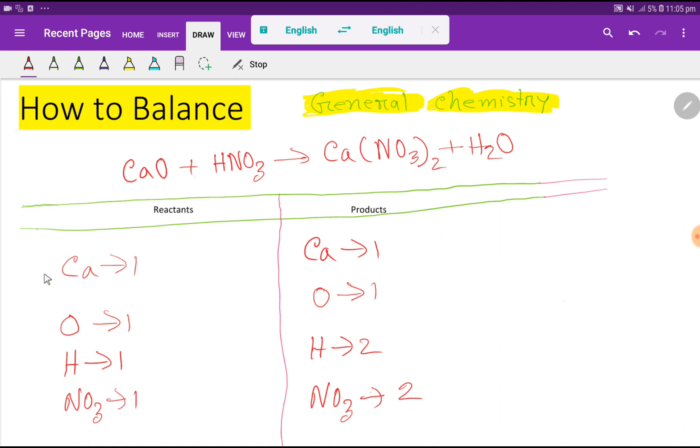So to balance this equation means we have to balance the number of calcium, oxygen, hydrogen, and NO3, that is nitrate polyatomic ion, from both sides.